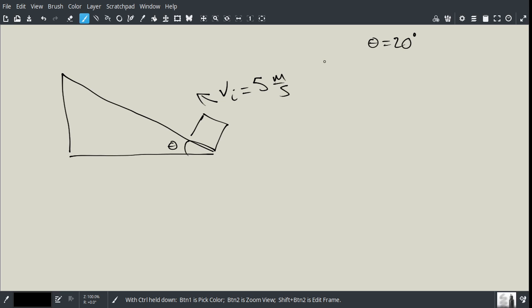The question is, how far up, what is this distance that it will travel, what's delta D up the plane? And also part B asks, how much time elapses before it returns to the starting point?